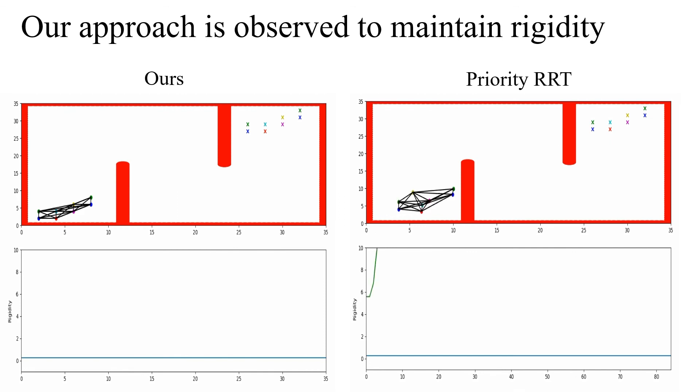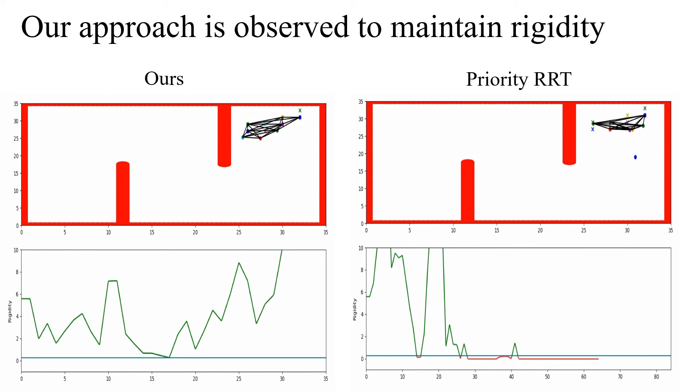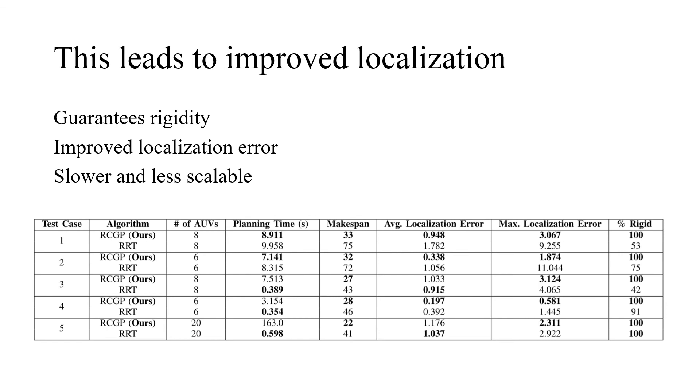In comparing our approach to a standard RRT implementation, we observe that we are able to maintain a minimum rigidity throughout the entire trajectory of the network. The RRT implementation is not capable of guaranteeing this and dips below the minimum specified rigidity at several points along its trajectory. Further investigation of these two planners indicates that our approach leads to reduced localization error and is capable of planning in reasonable times for moderate numbers of AUVs.